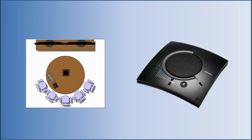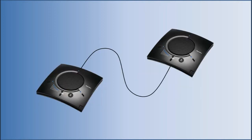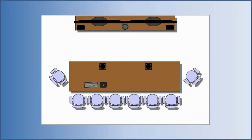Small group workspaces can use a group USB speakerphone like the ClearOne Chat 150, supporting up to 8 people gathered around the device. An additional Chat 150 can be added using a standard Cat5 cable, supporting up to around 16 people across the two units.